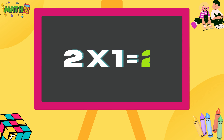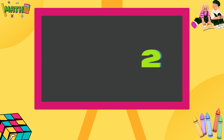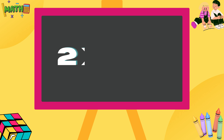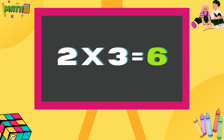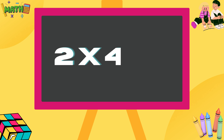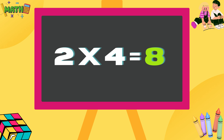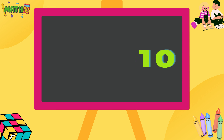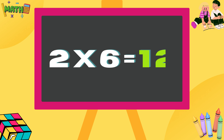Two ones are two. Two twos are four. Two threes are six. Two fours are eight. Two fives are ten. Two sixes are twelve.